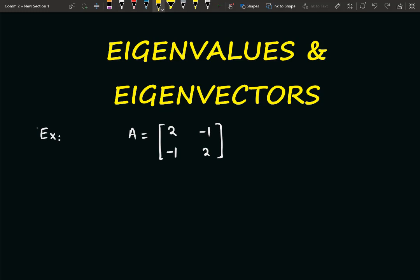So the first step is to compute the eigenvalues, and for this we need to find a determinant which is |λI - A| and put it equal to 0. So here this A is our system matrix.